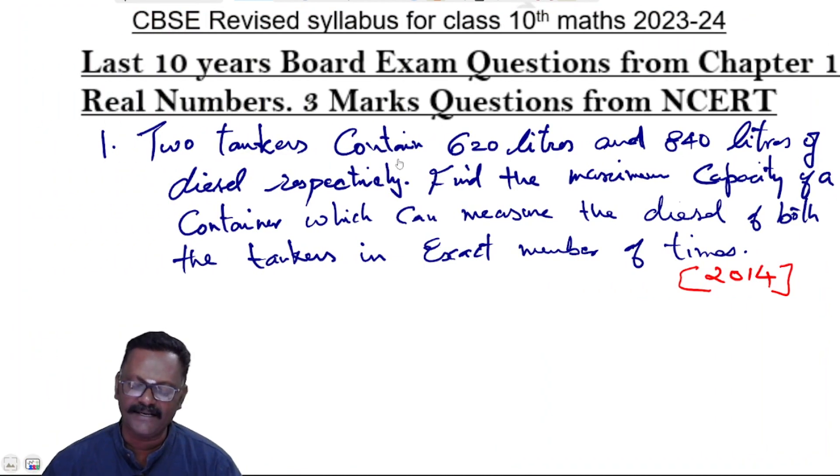Two tankers contain 620 liters and 840 liters of diesel respectively. Find the maximum capacity of the container which can measure the diesel of both the tankers in exact number of times. This question is from 2014.